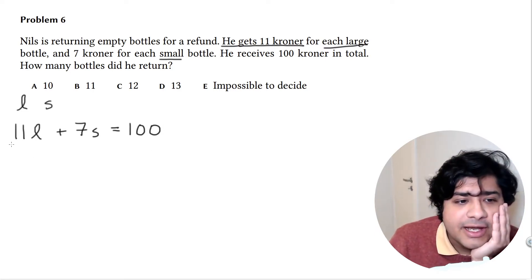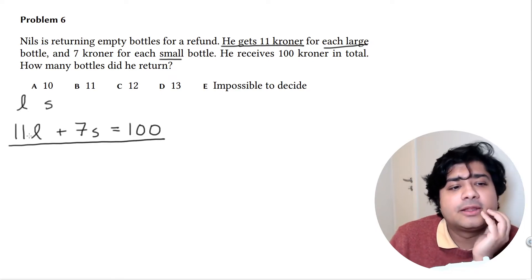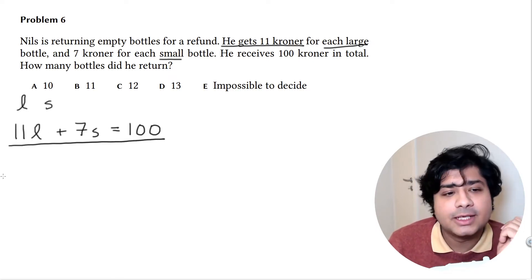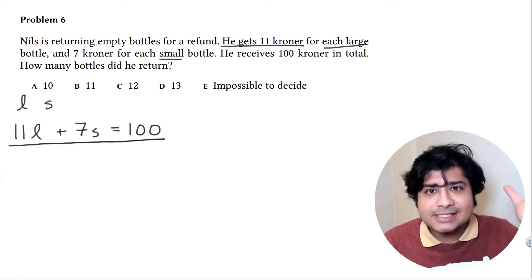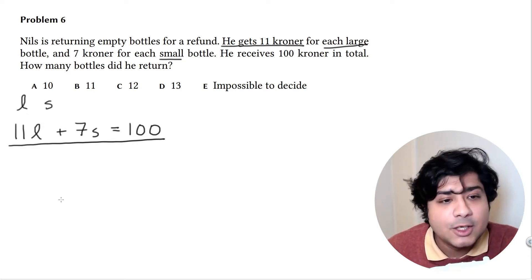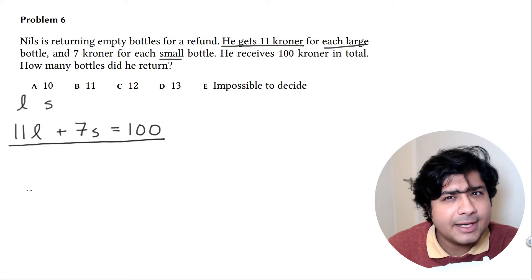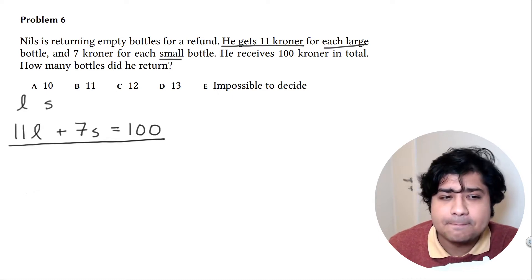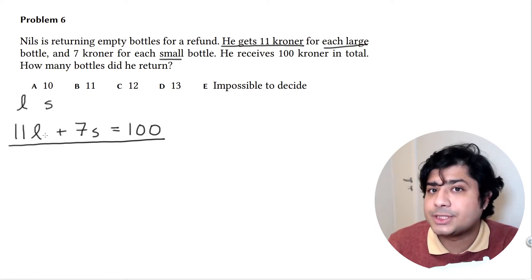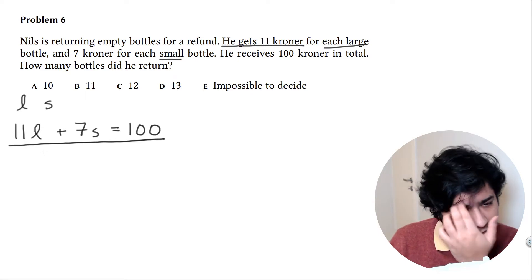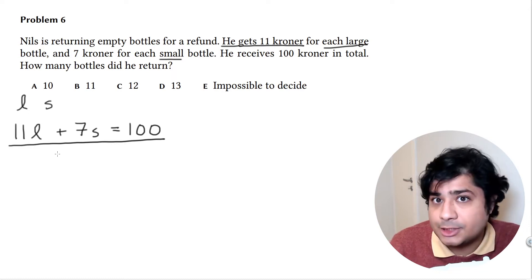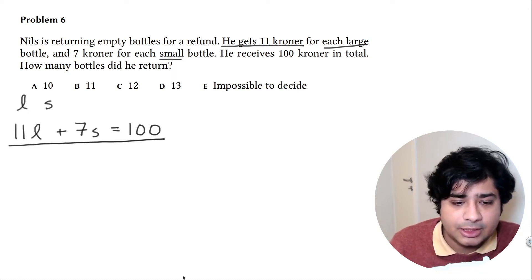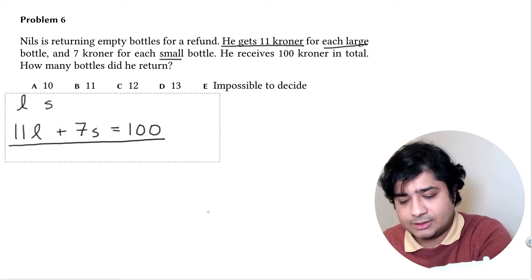We have this one equation with two unknowns. Maybe you're one of those people who can just magically see by doing some mental arithmetic what the answer is, but I'm not, so I'm going to try something here. Let's think about the large bottles and create a little table.